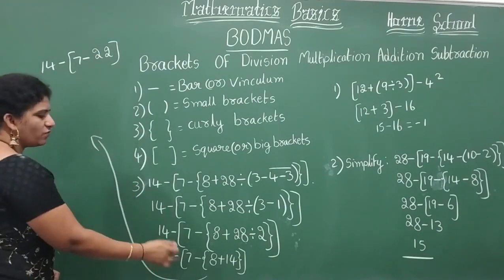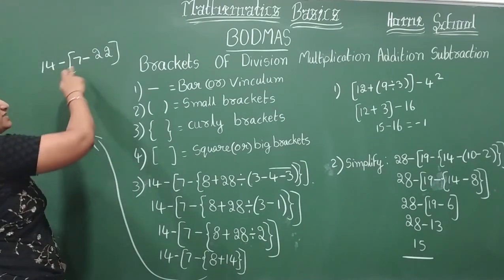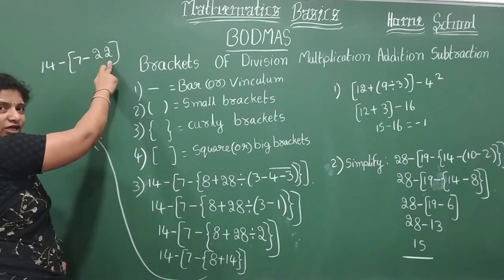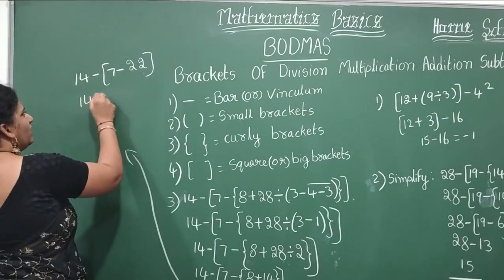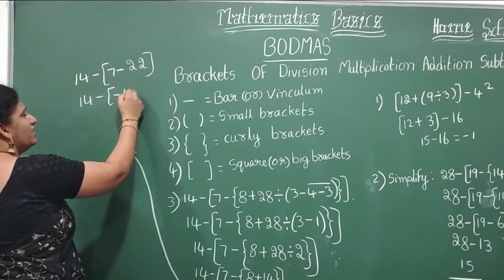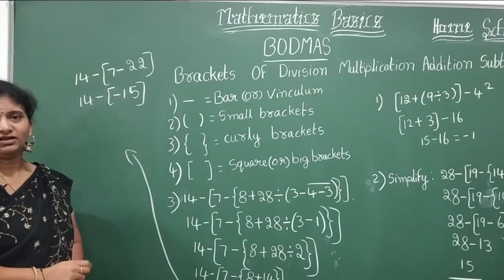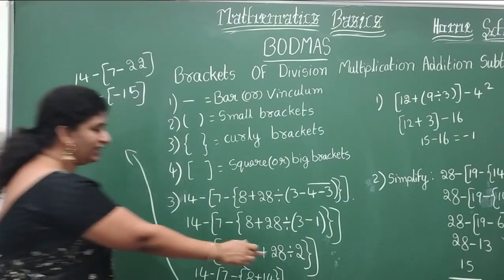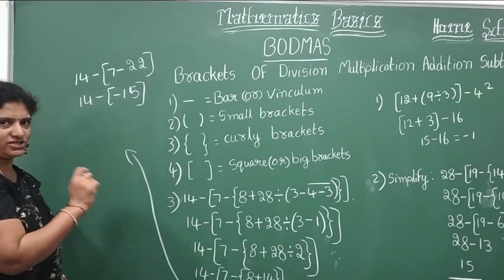Now last one more bracket is left. That is your big bracket. 7 minus 22. What is this 7 minus 22? It will be minus. You have subtracted and take negative sign, that is minus 15.